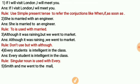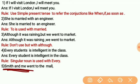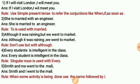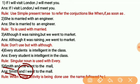Next: 'Smith and me went to the mall.' This is an easy question. The correct answer is 'Smith and I went to the mall,' not 'Smith and me.' For example: 'Rahul and I go to play,' 'Sita and I went to the mall.' Always use the subject pronoun 'I,' not the object pronoun 'me,' as the subject.